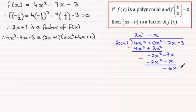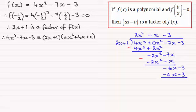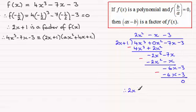We subtract: minus 2x squared minus minus 2x squared is 0, and minus 7x minus minus x gives minus 6x. Bring down the minus 3. What do we multiply 2x by to give minus 6x? That's minus 3. So minus 3 times 2x plus 1 gives minus 6x minus 3. Subtracting, the remainder is 0 — no remainder — which shows that 2x plus 1 is a factor of the polynomial.